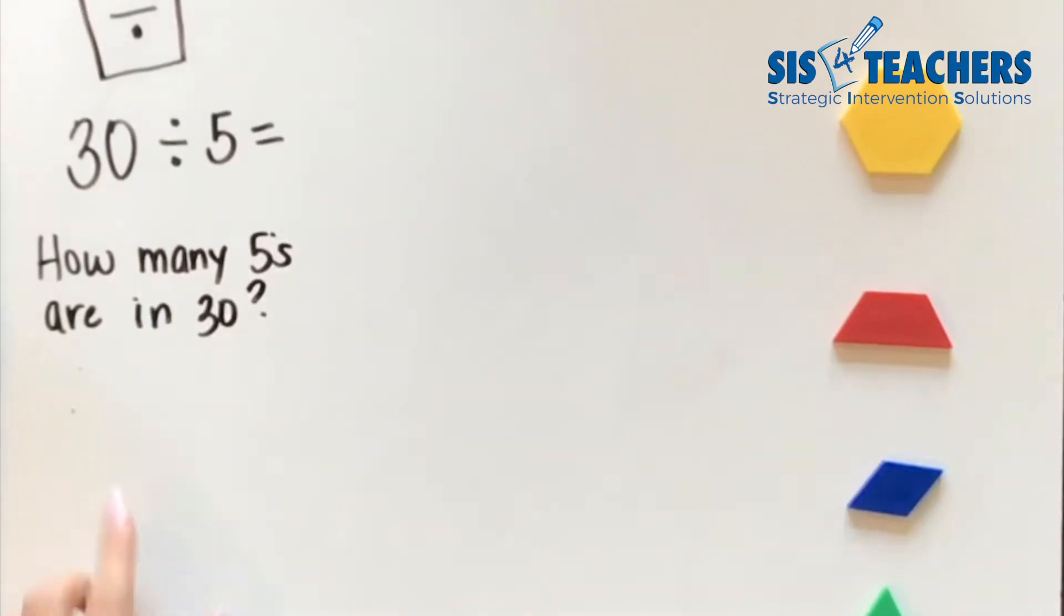When we think about this for division, it's asking this question that sounds a little bit different. In our previous multiplication videos, we've talked about 30 times fives means 30 groups of five. This is looking at the other way. It's asking how many fives are in 30. It would be the same thing if I were to ask about 81 divided by 9. It wants to know how many nines are in 81.